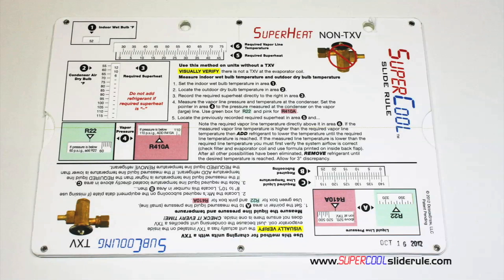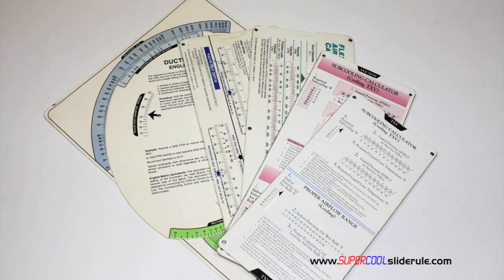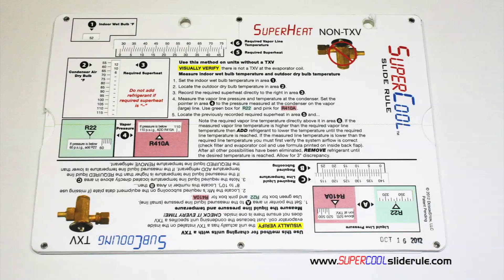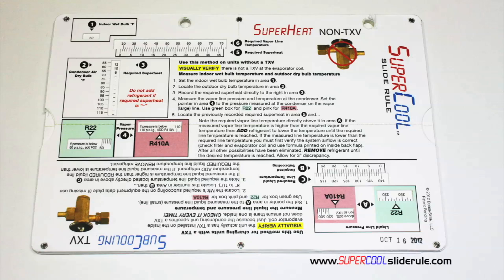I would like to take a minute to introduce you to the coolest tool in the HVAC industry. Historically, technicians have carried 4 or 5 different slide rules — one for R22, one for R410A, one for metal duct sizing, one for flexible duct sizing, and yet others for diagnostics or troubleshooting. Thankfully, those days are gone. This one tool will allow you to charge a system with R22 or R410A in either the superheat or subcooling method.